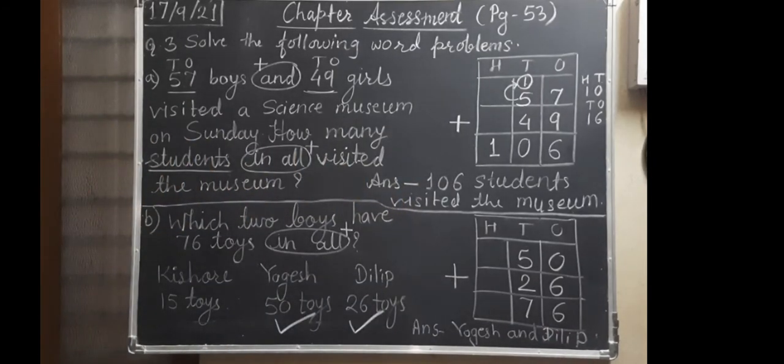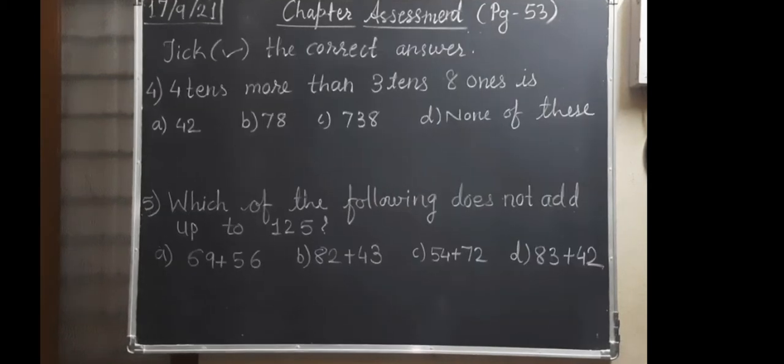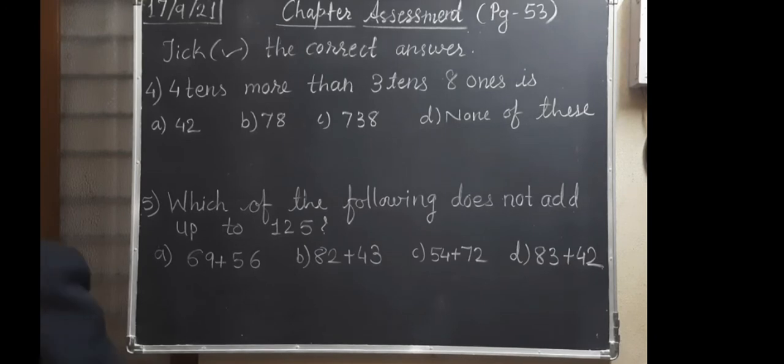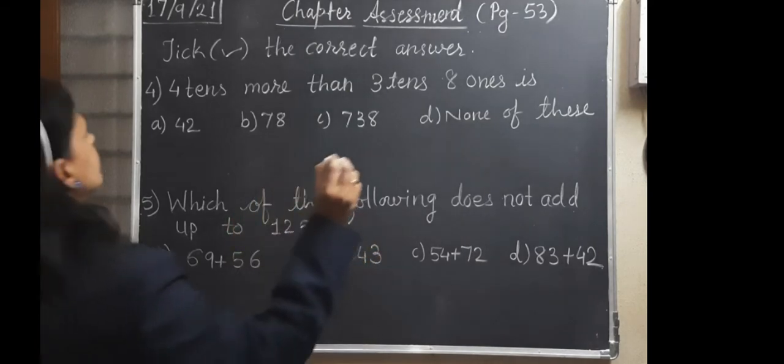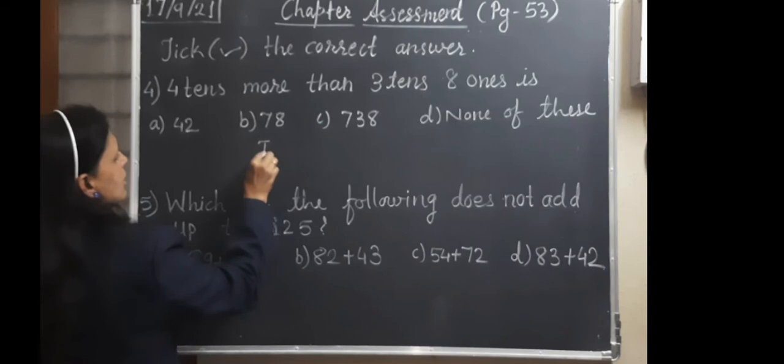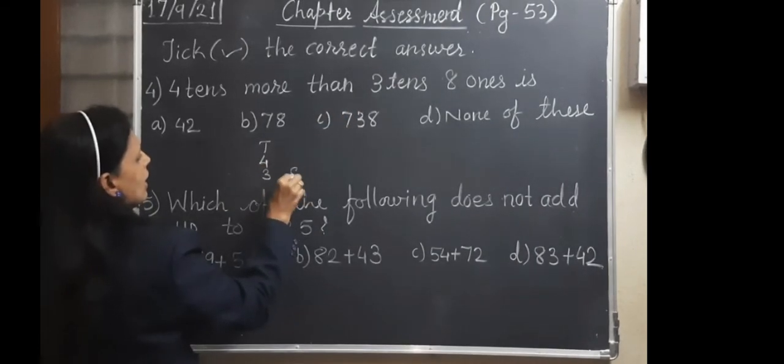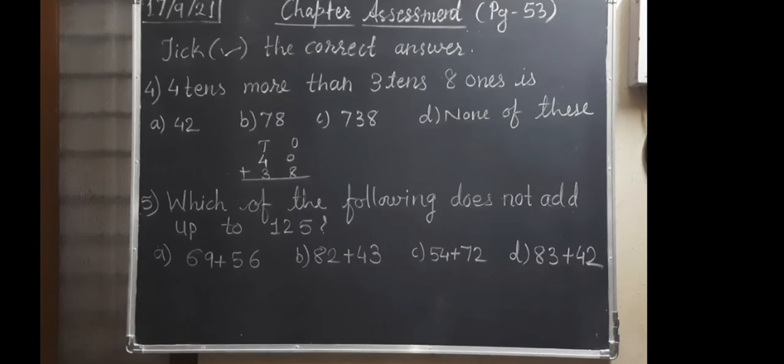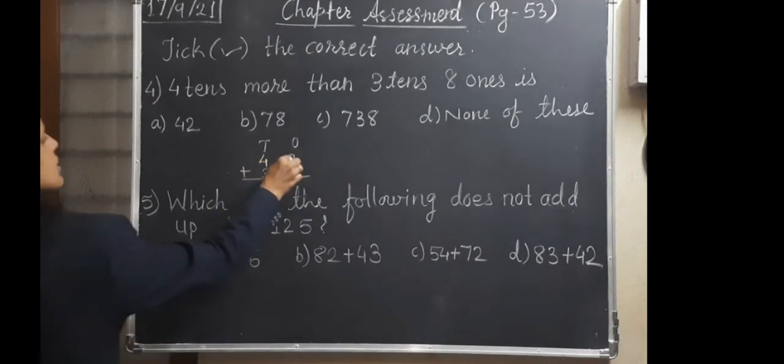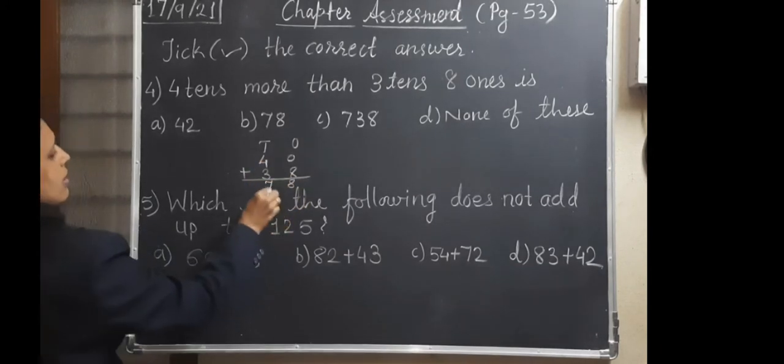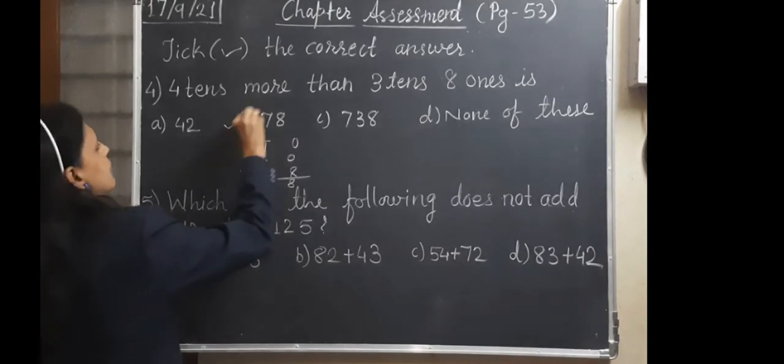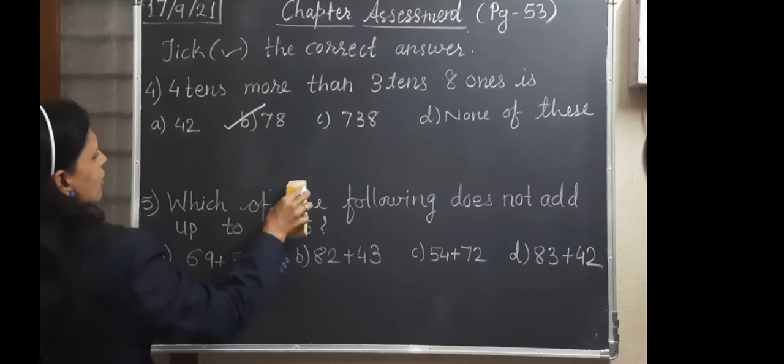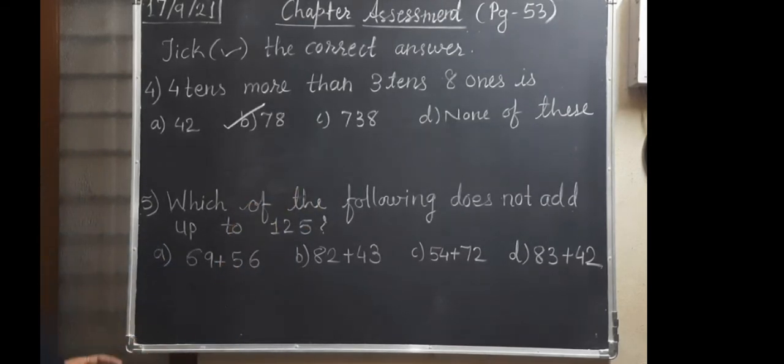Let's see next question. Tick the correct answer. For C: 4 tens more than 3 tens 8 ones is. We have to write the answer of this. So here we will do little rough work. 4 tens, so we will write tens 4. More than what? 3 tens and 8 ones. 4 tens 4, 40 we are knowing this one. Now you have to add it. So answer is coming 0 plus 8, 8. 4 plus 3, 7. 78 is your answer. It is at B. So B is your right answer.